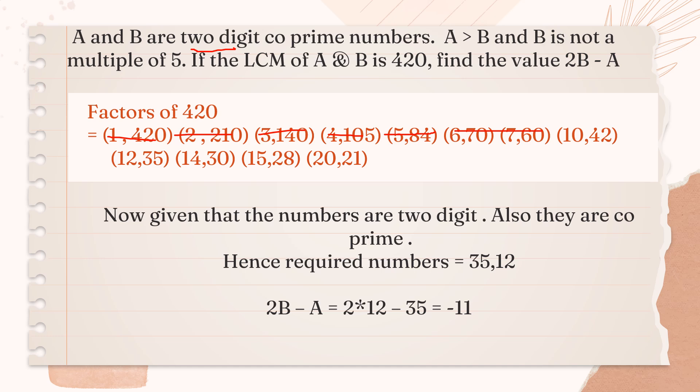Next condition is they are co-prime numbers. What are co-prime numbers? Those numbers which do not have any other common factor other than 1. So, 10 and 42, they are not co-prime. I cut them. 14 and 30, they are not co-prime. I cut them again. We are left with three sets of numbers.